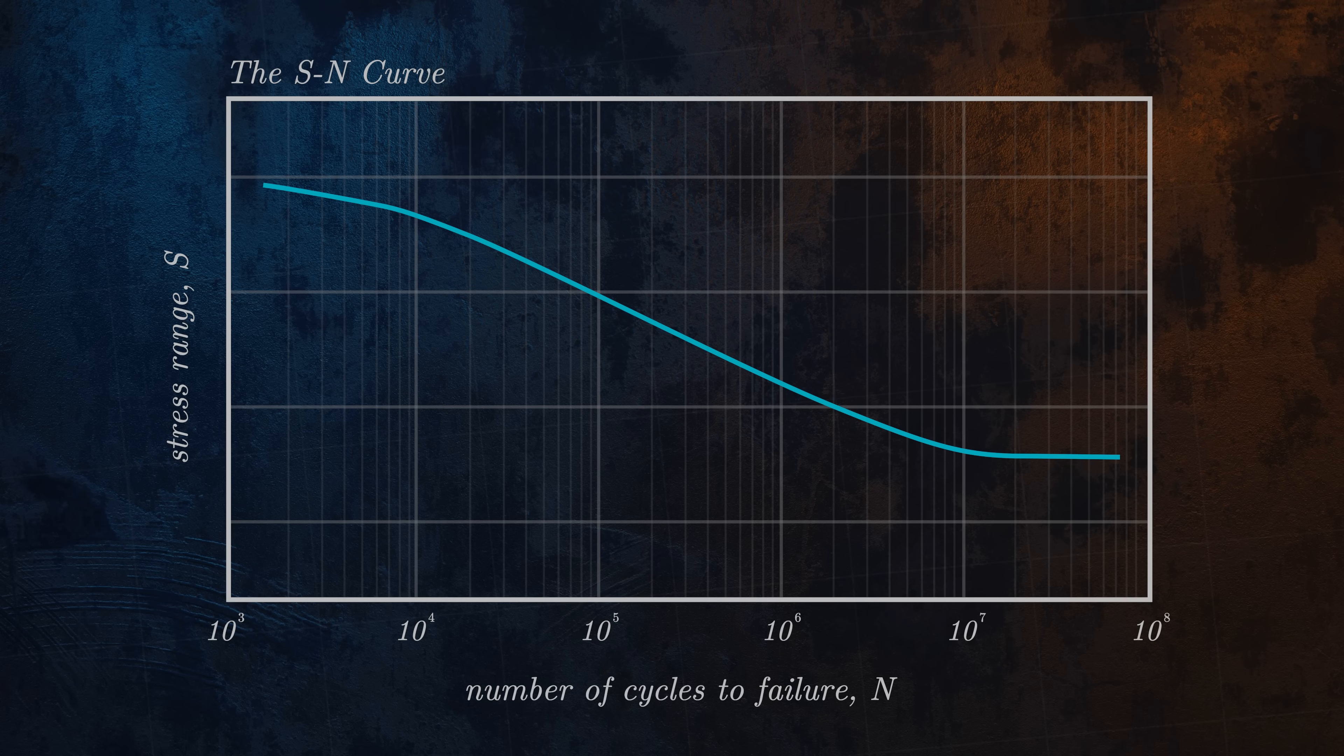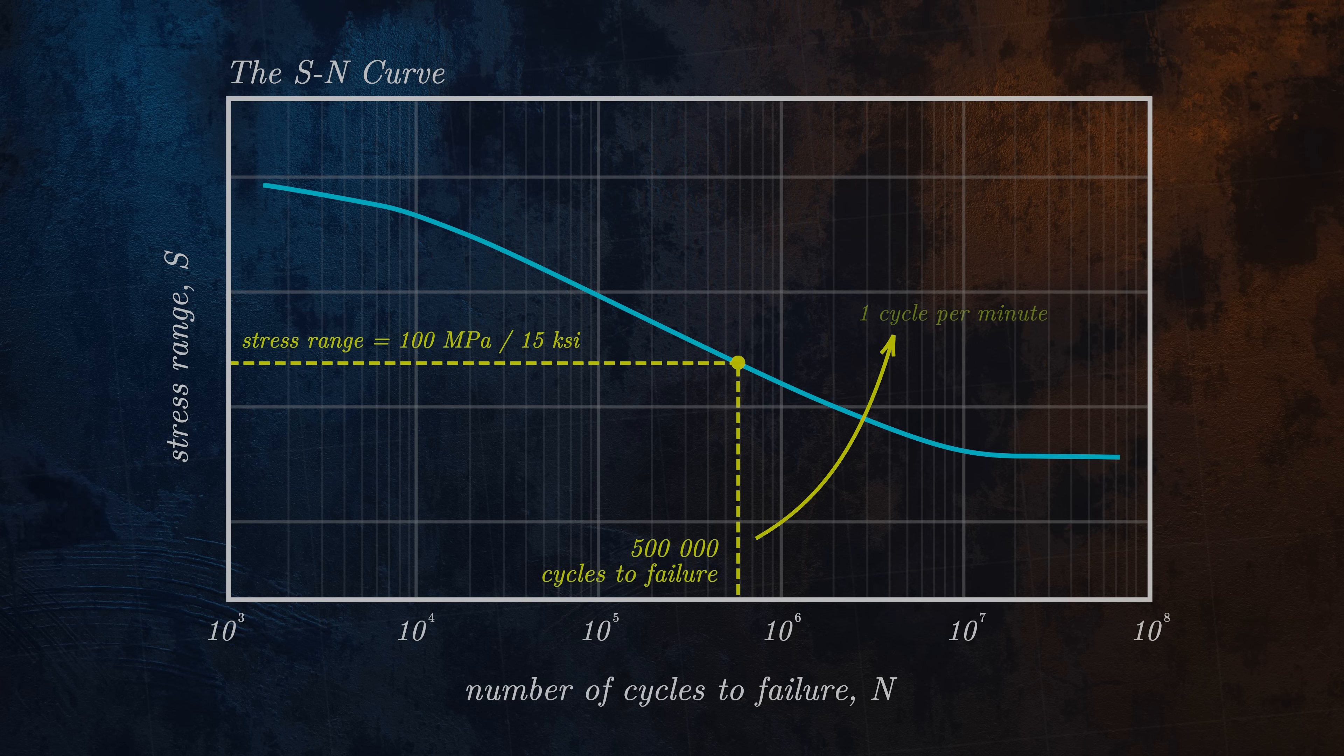For example, if we have a stress range of 100 MPa or 15 KSI, this S-N curve tells us that the number of cycles to failure is 500,000. If we know that our component is subjected to one cycle per minute, we could predict that our component will fail due to fatigue after approximately one year.